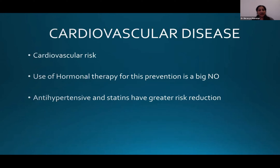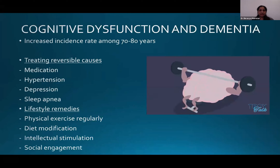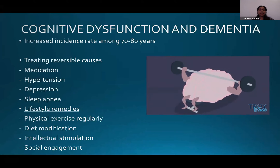Cardiovascular risk is high in this population, and the use of hormonal therapy for its prevention is a big no — in fact, antihypertensives and statins have a greater risk reduction. Cognitive dysfunction and dementia increase in the 70 to 80 year age group; treating reversible causes like benzodiazepines, hypertension, and depression helps, as do lifestyle remedies such as diet modification, exercise, social engagement, and intellectual stimulation.